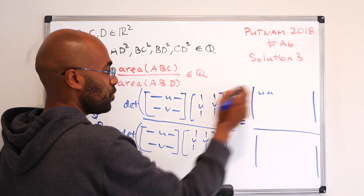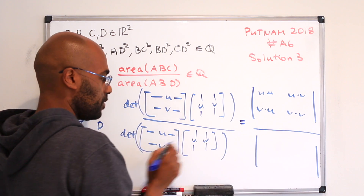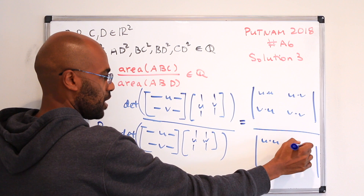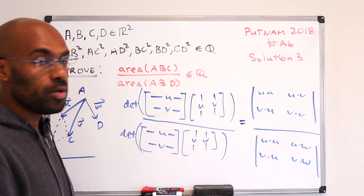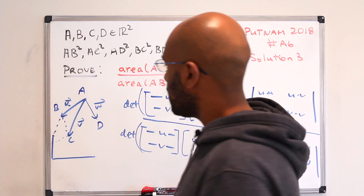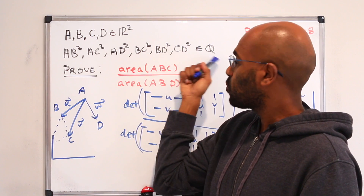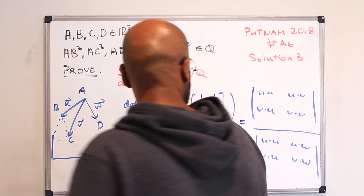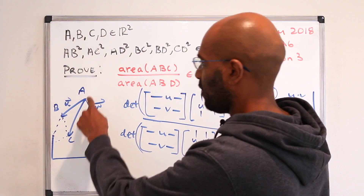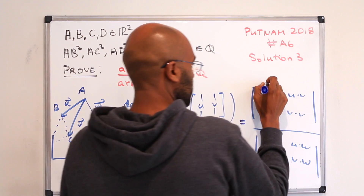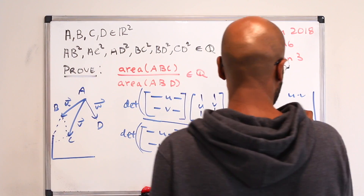In the numerator we'll have entries U·U, U·V, V·U, and V·V, whereas in the denominator we'll have U·U, U·W, V·U, and V·W. Some of these expressions are already lengths of vectors in our diagram whose squares are rational numbers. For example, U·U is the square of the length of vector U, which is AB squared. Similarly, V·V is AC squared.